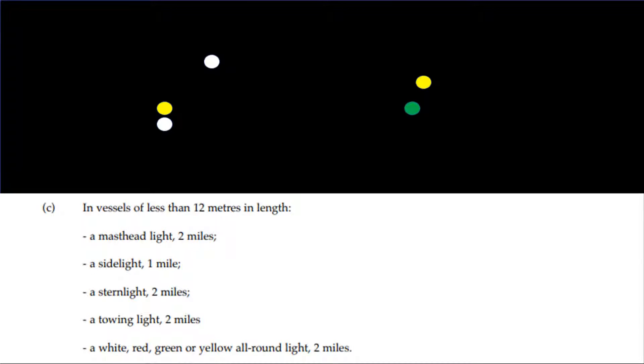In vessels of less than 12 metres in length: a masthead light 2 miles, a side light 1 mile, a stern light 2 miles, a towing light 2 miles, a white, red, green or yellow all-round light 2 miles.